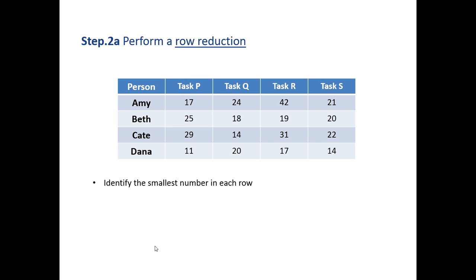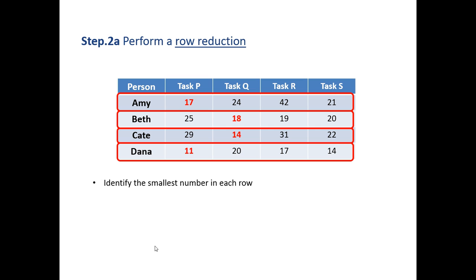So first of all, the first step in trying to perform a Hungarian algorithm or an allocation problem is to complete a row reduction. And as the name suggests, we want to reduce each row. So first of all, identify the smallest number in each row. In Amy's row the numbers are 17, 24, 42, and 21, and 17 clearly is the smallest number. In Beth's, 18 is the smallest number; in Kate's, 14 is the smallest number; and Dana's, 11 is the smallest number.